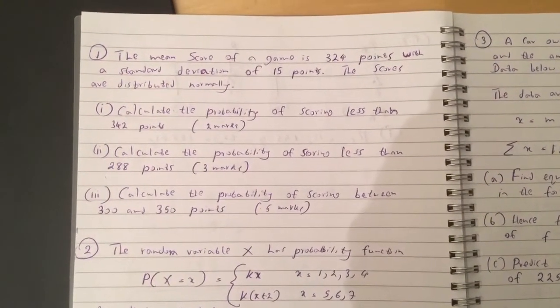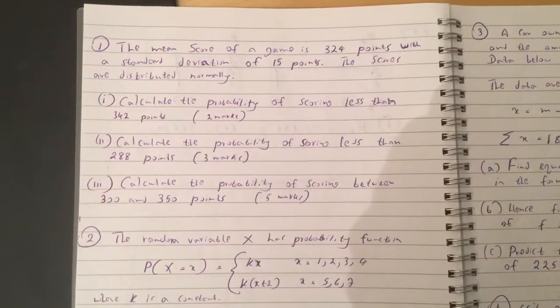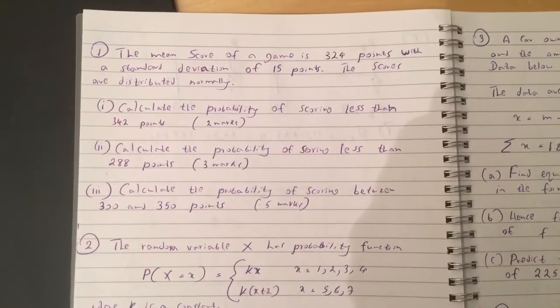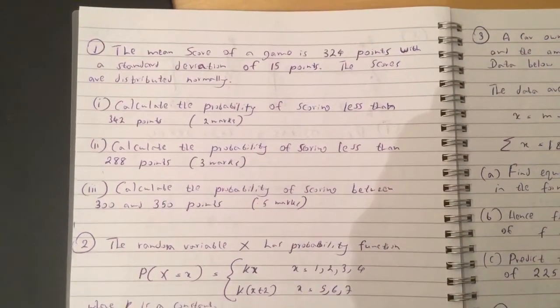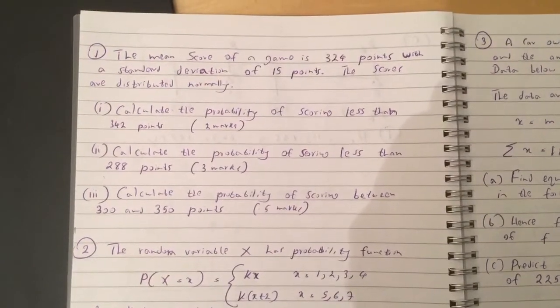Calculate the probability of scoring less than 342 points. Calculate the probability of scoring less than 288 points. Calculate the probability of scoring between 300 and 350 points.